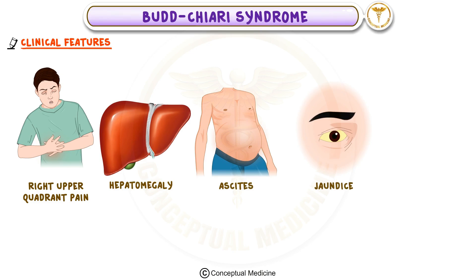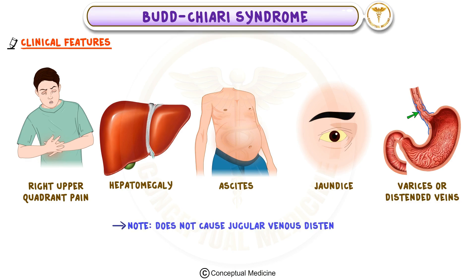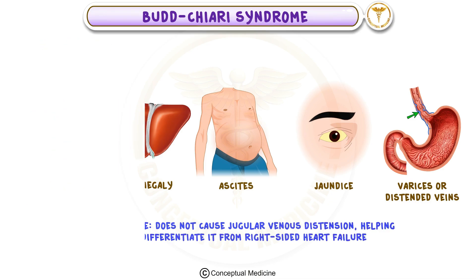In some cases, patients might develop varices or distended veins due to increased blood flow through collateral pathways. However, an important point to note is that Budd-Chiari syndrome does not typically cause jugular venous distension, helping us differentiate it from conditions like right-sided heart failure.